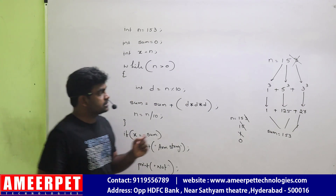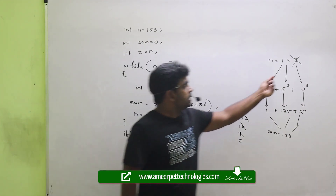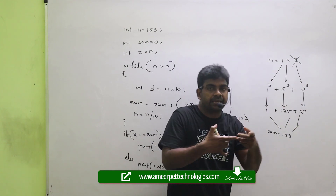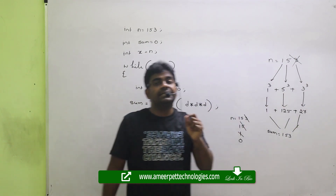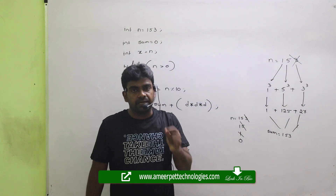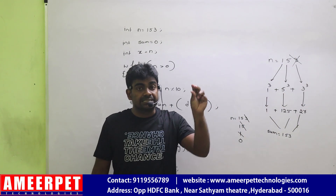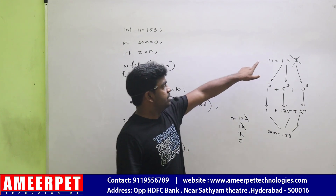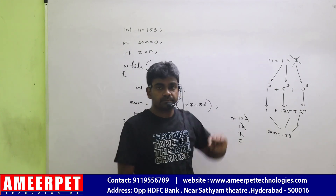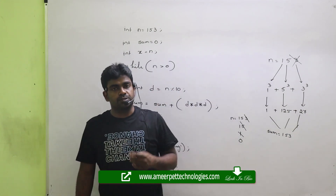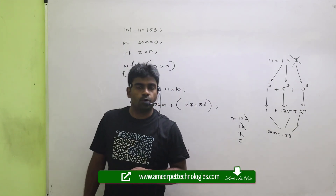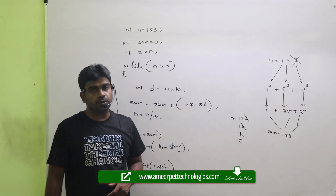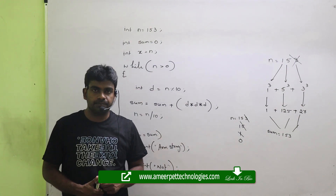What is an Armstrong number? Each digit raised to the power of how many digits there are — their sum equals the given number. That is called an Armstrong number. Hope you understood. Please practice the code. Thank you.